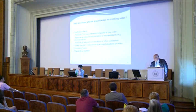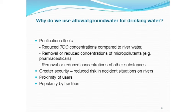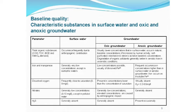Why do we use alluvial aquifer groundwater for drinking water so often? Because of purification action, reduced DOC, removal and reduced concentration of micropollutants, removal and reduced concentration of other substances, greater security in the case of accidental spill, proximity, and popularity by tradition. Baseline quality is important. Groundwater is four to six times slower than surface stream, so therefore there is a very big variety of baseline quality. Oxic groundwater is different from anoxic, and COD and TOC are much different between surface and groundwater most often.